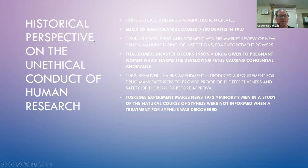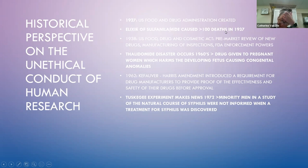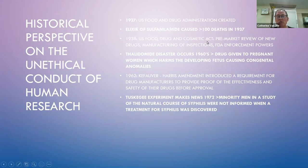Looking at the historic perspective of unethical conduct in human research: the FDA was created in 1927. In 1937, the elixir of sulfanilamide caused over a hundred deaths. This elixir was used for a variety of ailments, but there were no regulations and animal testing was not required — they just tried it, and unfortunately it did not turn out well. As a result, in 1938, the U.S. Food, Drug, and Cosmetic Act established pre-market review of new drugs, manufacturing inspections, and FDA enforcement powers.